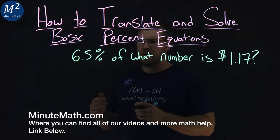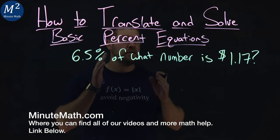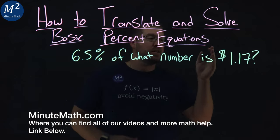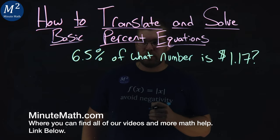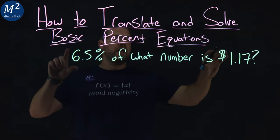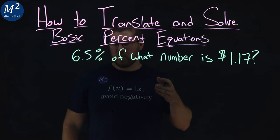We're given this problem right here: 6.5% of what number is $1.17? Let's see if we can break down this statement into a mathematical equation.